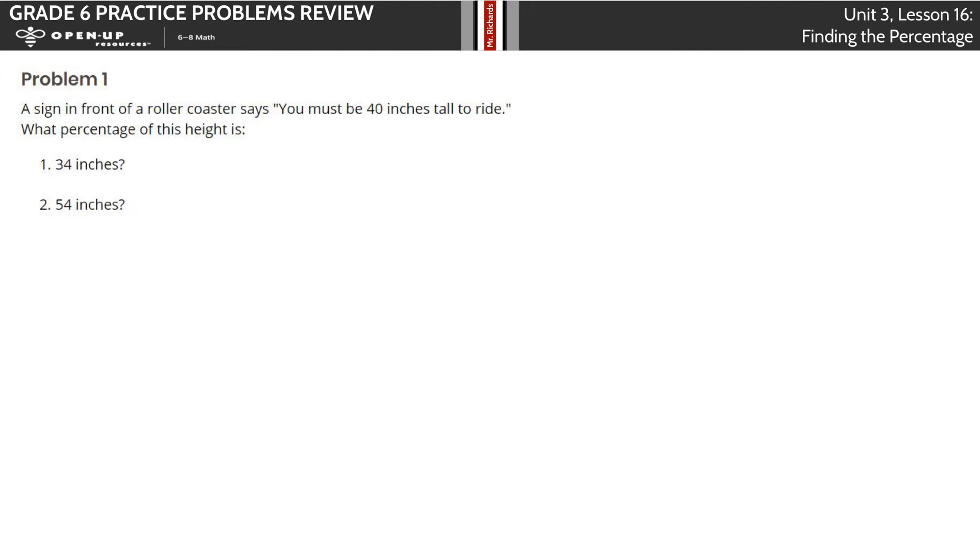Let's cover the 34 inches first. If 40 is the entire whole, 34 is the part that we're looking for. We can take 34 and divide it by 40. Once we take 34 and divide it by 40, you can get 0.85. Once you get 0.85, move this decimal place two spots to the right to get a final solution of 85%.